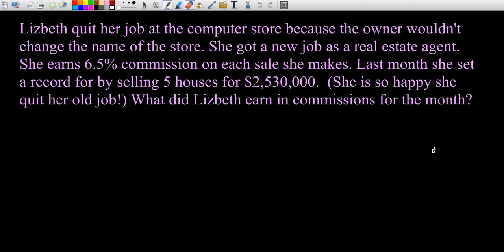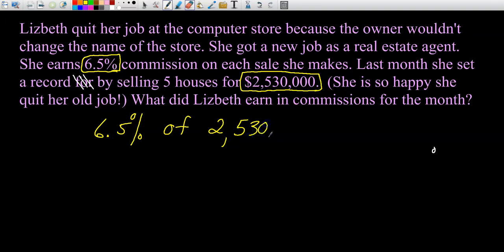Lizbeth quit her job at the computer store because the owner would not change the name. She got a new job as a real estate agent. She earned 6.5% commission on each sale that she makes. Last month, she set a record by selling five houses for $2,530,000. She is so happy she quit her old job. What did Lizbeth earn in commissions for the month? We need to take 6.5% of the total sales, $2,530,000.